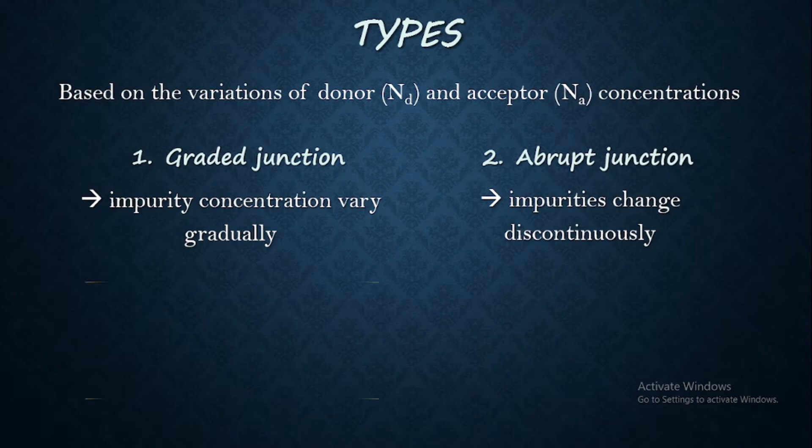And in N region, excess number of electrons will be there. Let us say N_D means donor concentration is present in N region because the impurities which are added to the intrinsic semiconductor, when it is pentavalent, it creates one extra electron. So it is something like a donating. So those impurities are called as donor impurities.